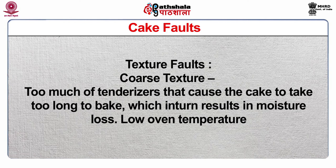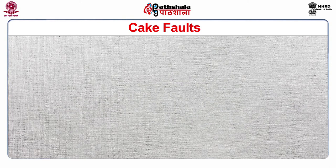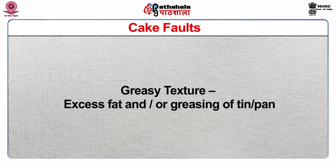Texture faults: the first can be a coarse texture, caused by too much tenderizer that causes the cake to take too long to bake, resulting in moisture loss, and low oven temperature. The second problem is greasy texture, caused by excess fat or greasing of tin and pan. Compact texture is caused by less tenderizer, more liquid, over-mixing of batter, or batter that is too hot or too cold, causing the emulsion to break — thus the batter curdles and gets less volume.